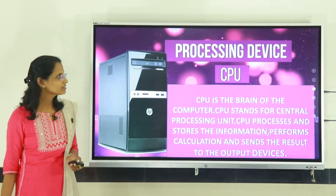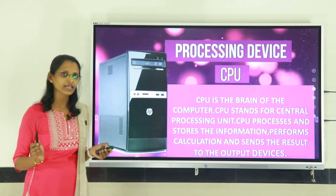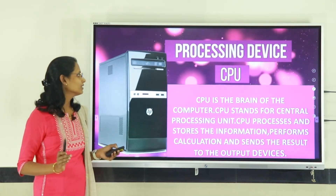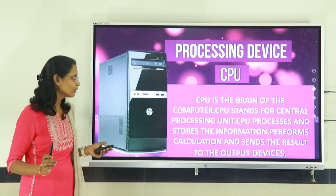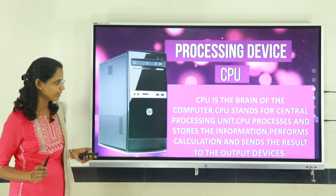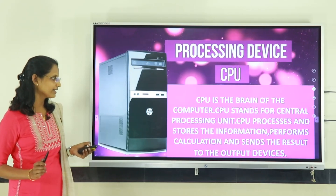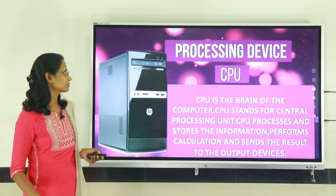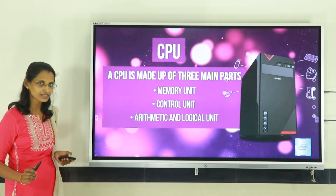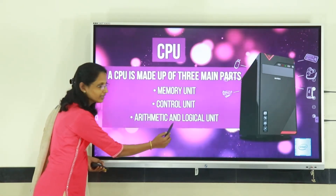The next category of device is the processing device, that is the CPU. CPU is the main important part of the computer; without CPU the computer does not work. CPU is the brain of the computer. CPU stands for Central Processing Unit. The main functions of CPU are: it processes and stores information, performs calculations, and sends the results to the output devices. The CPU is made up of three main parts: memory unit, control unit, and arithmetic and logical unit.